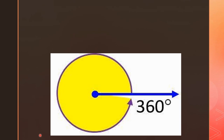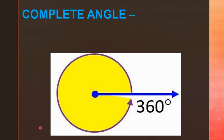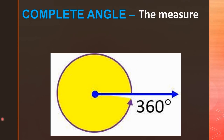Next is the complete angle. To complete one full round and come back to its original position — as in the figure, it turns through 180 degrees making a straight angle, then continues another 180 degrees, completing 360 degrees in all. An angle made in this way is called a full or complete angle. The measure of a complete angle is 360 degrees.